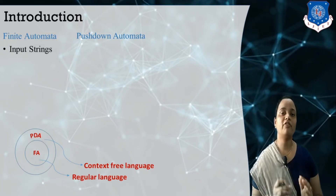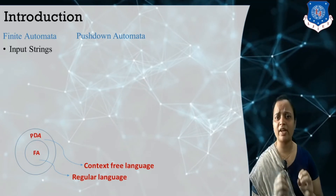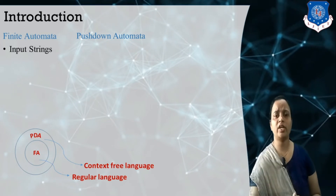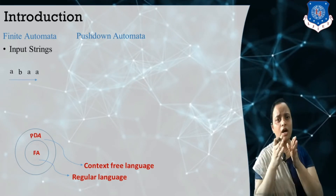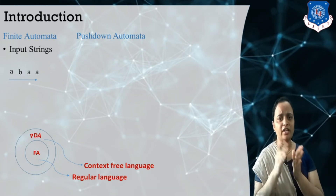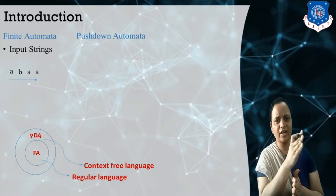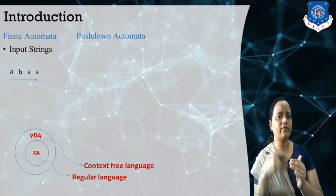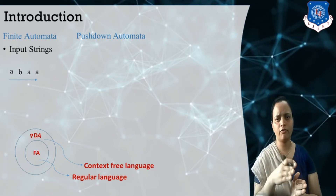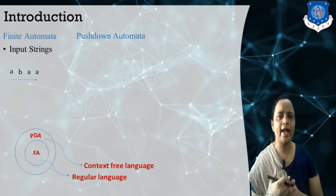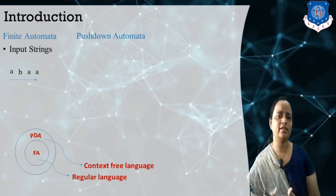Now, if you remember, in a finite automata machine, the main components are: finite automata contains the input string. Here we can say A, B, A, A. In the input string, we read a character one by one and transition from one state to another state, reading the input string only in one direction from left to right. If after reading the end of the string we reach the final state, we say that this string is accepted by this machine.